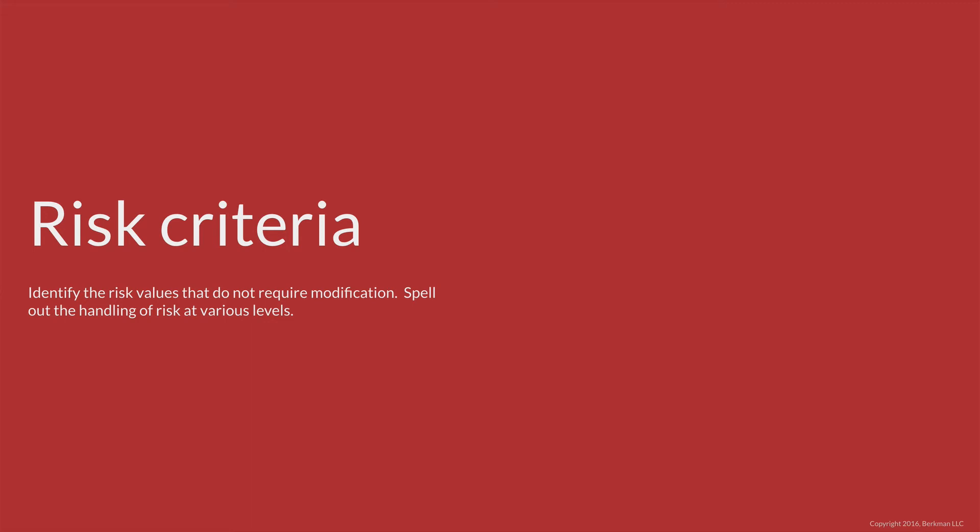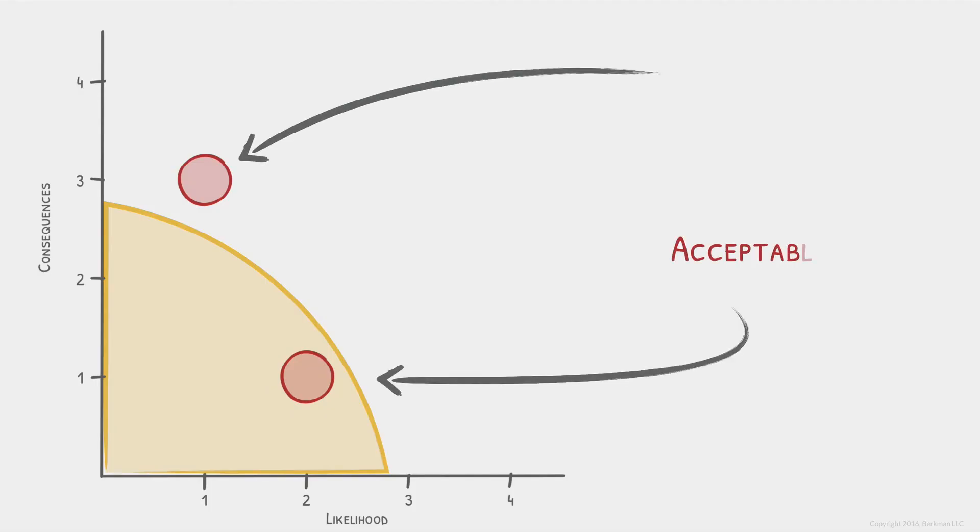Risk criteria separate the acceptable risks from the unacceptable risks. No organization has unlimited resources to reduce every legal risk to zero. Every judgment about what to do with a legal risk is based on an implicit or explicit risk criteria or risk tolerance policy. Our framework makes the criteria explicit.